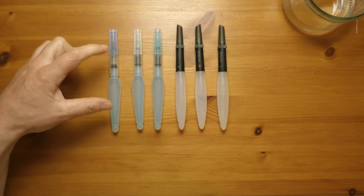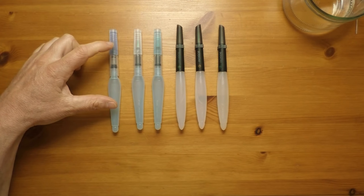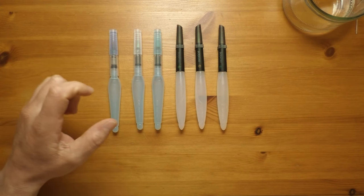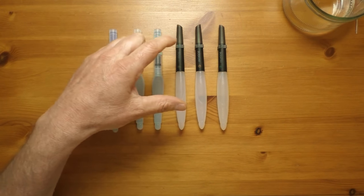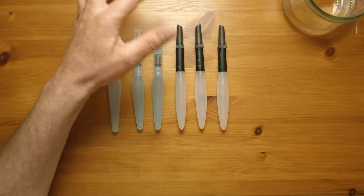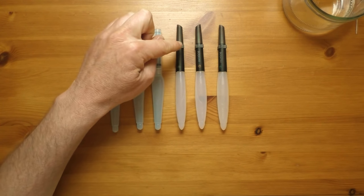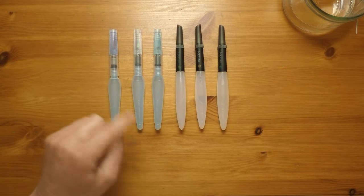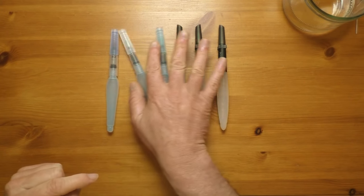So what I'm going to do, I'm just going to demonstrate it just on one of the Pento water brushes. Because the Derwents are pretty much the same, it's the same system, more or less the same components, it just looks different in there. So I'll show you just on the Pento, so I'll just move these out of the way.